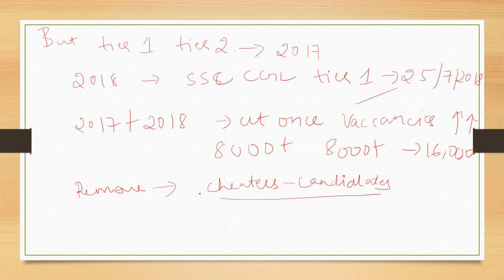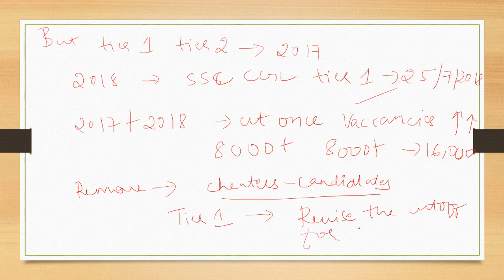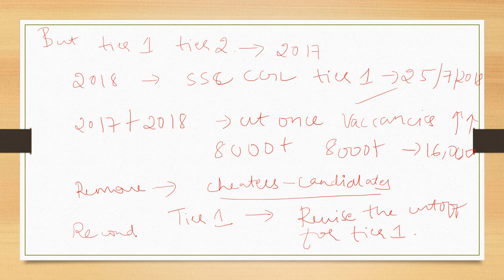Remove all these people from the tier 1 list, revise the cutoff for tier 1 after removing these people and then reconduct tier 2 exam once again for this year.